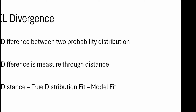KL divergence, as the name suggests, is a distance metric. There are various distance metrics in the world of statistical modeling and machine learning. KL divergence is one way of calculating distance between two distributions. It measures the difference between two probability distributions — it could be discrete or continuous probability distributions. It essentially measures the distance between two distributions: one may be the true distribution and the other the empirical distribution for which you've built a model.